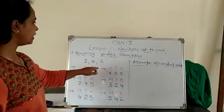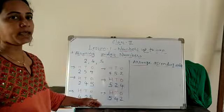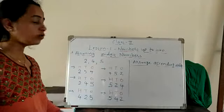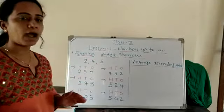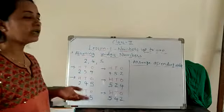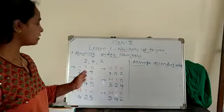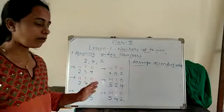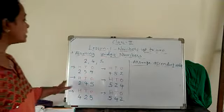We are getting 6 numbers from 3 digits. So, understood? This is how to form 3-digit numbers. Maybe you can understand that.